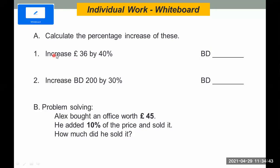For your task, please work this out. Calculate the percentage increase of this: Increase 36 pounds by 40% and increase 200 dinar by 30%. And for the problem-solving, Alex bought an office item worth 45 euro. He added 10% of the price and sold it. How much did he sell it? It's an office supply. You cannot buy an office for 45 euro. You can answer this one and post it in our class drive folder.